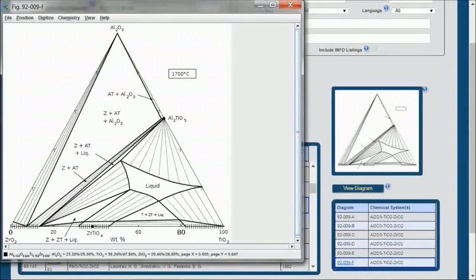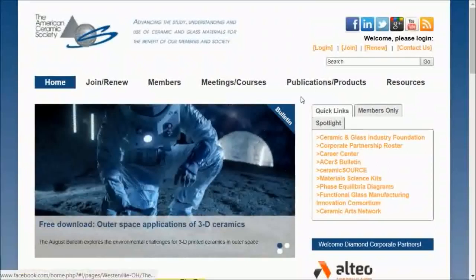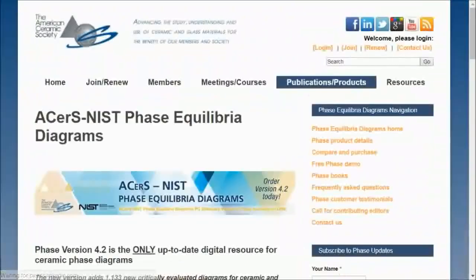So this brings us to the end of our demonstration. To get more information about our phase equilibrium diagram products, you can go to ceramics.org, and under publications products, phase equilibrium diagrams, you can see different details of the products. You can compare our different versions and purchase them and get books.